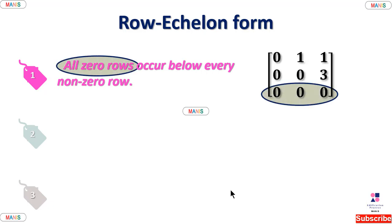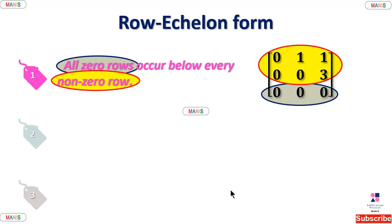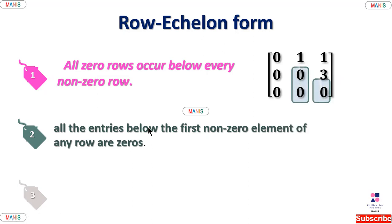It means zero rows appear below non-zero rows in the matrix. The last row is the zero row. Non-zero rows come above the zero rows. A row is called a non-zero row if at least one entry is non-zero. If all elements are zero, then the row is said to be a zero row. Second point: entries below the first non-zero element of any non-zero row are zeros.